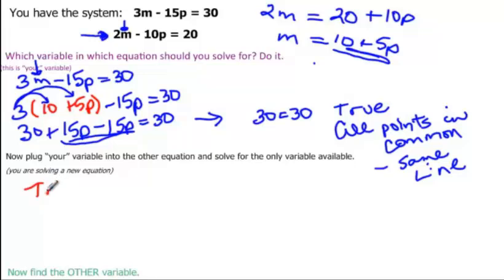Alright, so let's try a couple points that we know are on either one of these lines. And I want to try the point 0, negative 2. So if I plug it into the top equation, I have 3 times 0, which is m, minus 15 times negative 2, which is p, is equal to 30.